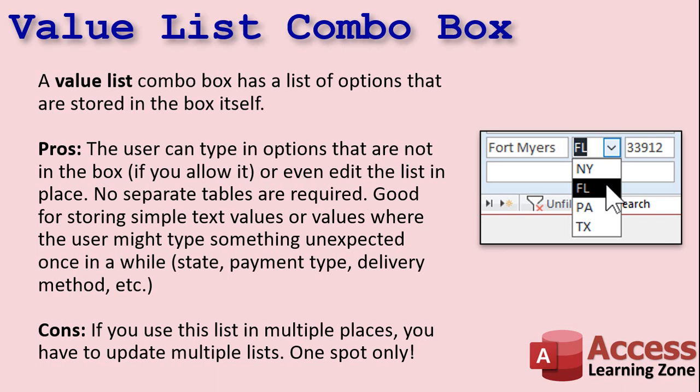That's why a combo box can be a good mixture — it's a combination between a list box and a text box. Some examples: state, payment type, delivery method. The pros are the user can type in options not in the box if you allow it, and you can even edit the list in place. No separate tables are required. The con is if you use a value list combo box that data is stored in the box itself, so you have to maintain multiple lists if you're going to keep the same list on multiple forms. So use it in one spot only.